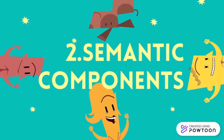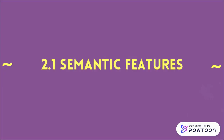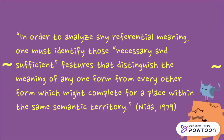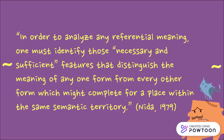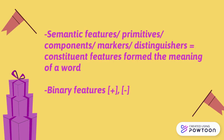Componential Analysis Procedures: Semantic Features. In order to analyze any referential meaning, one must identify those necessary and sufficient features that distinguish the meaning of any one form from an array of subforms which might compete for a place within the same semantic territory. Semantic features — also called primitives, components, markers, and distinguishers — are constituent features that form the meaning of a word.